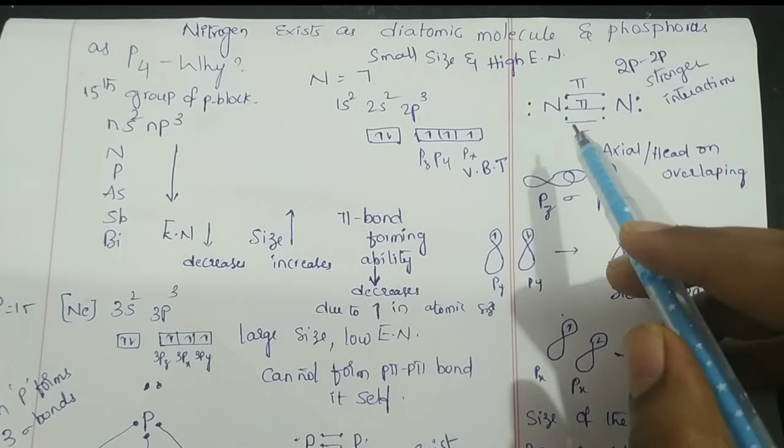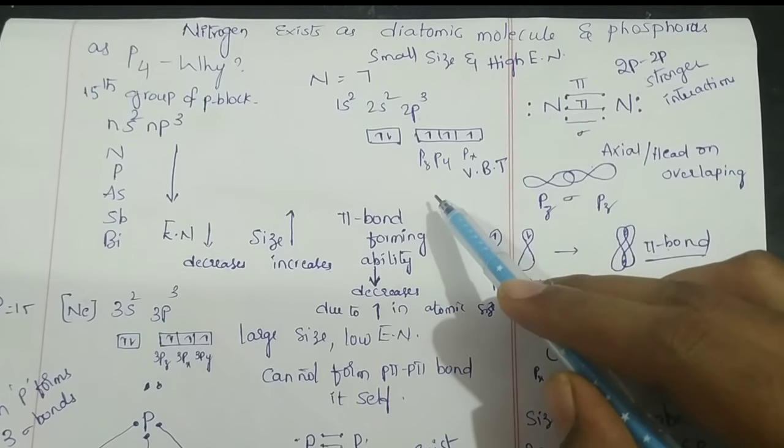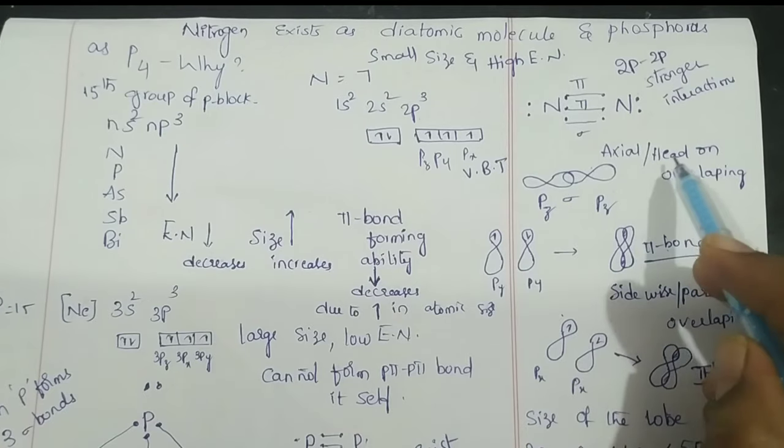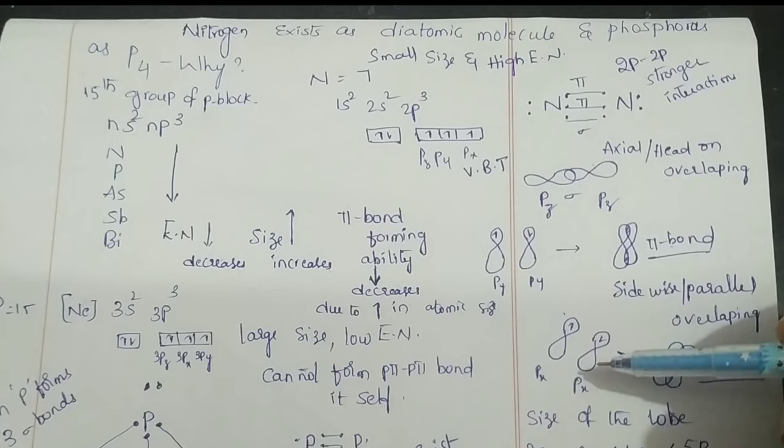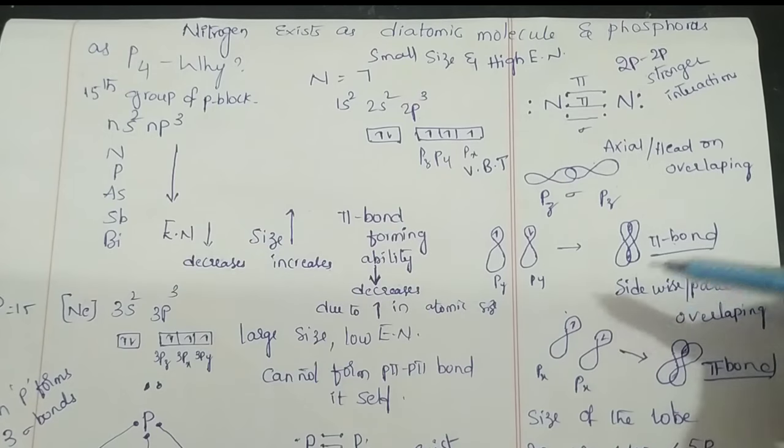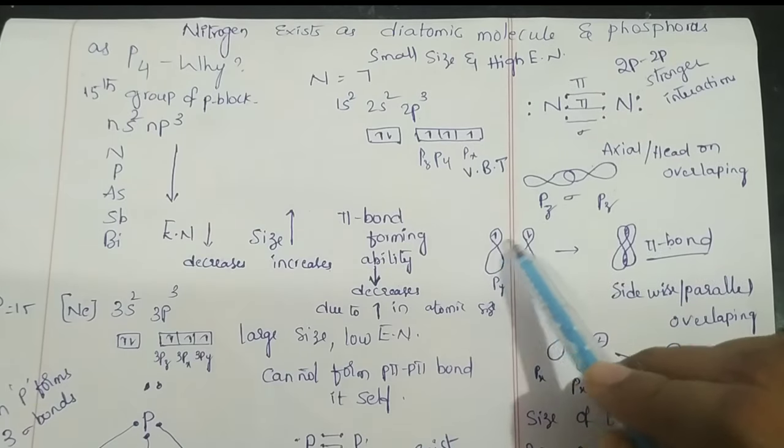According to valence bond theory, the sigma bond is formed by pz and pz orbitals through head-on overlapping or axial overlapping. Pi bonds form through px-px and py-py orbitals via parallel overlapping with opposite spin.